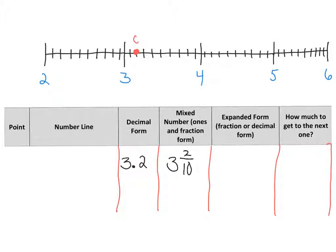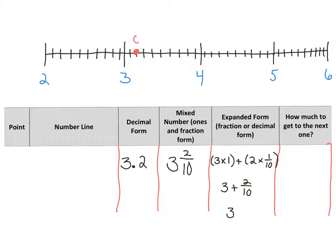Now if we want to write this in expanded form — how many ones do we have? We've got three ones, so we write three times one, plus how many fractions do we have? We have two at one-tenth, because there are two of one-tenth. And that is how we write our expanded form. If we put that back together, we do the work in parentheses first — remember that distributive property — and three times one is three, plus two times one-tenth is two-tenths, which gives us three and two-tenths.